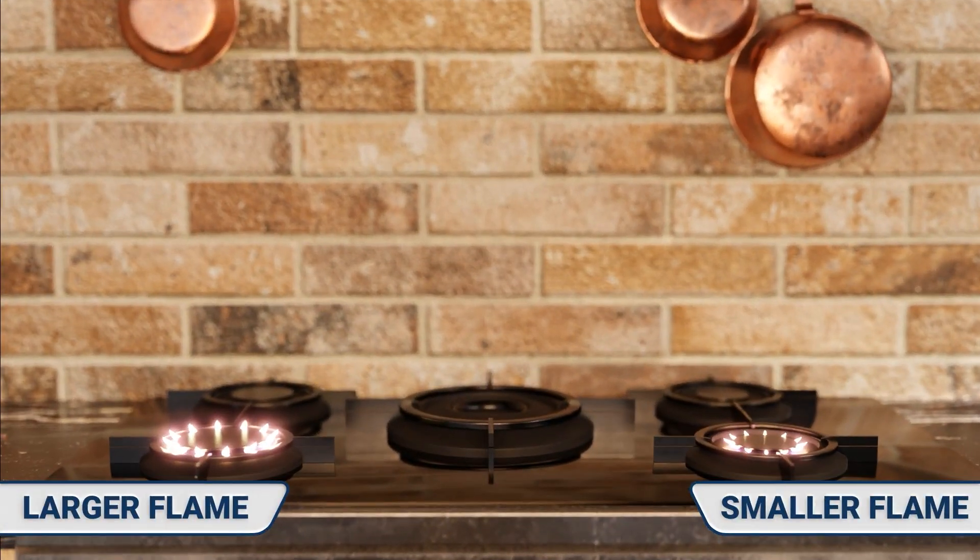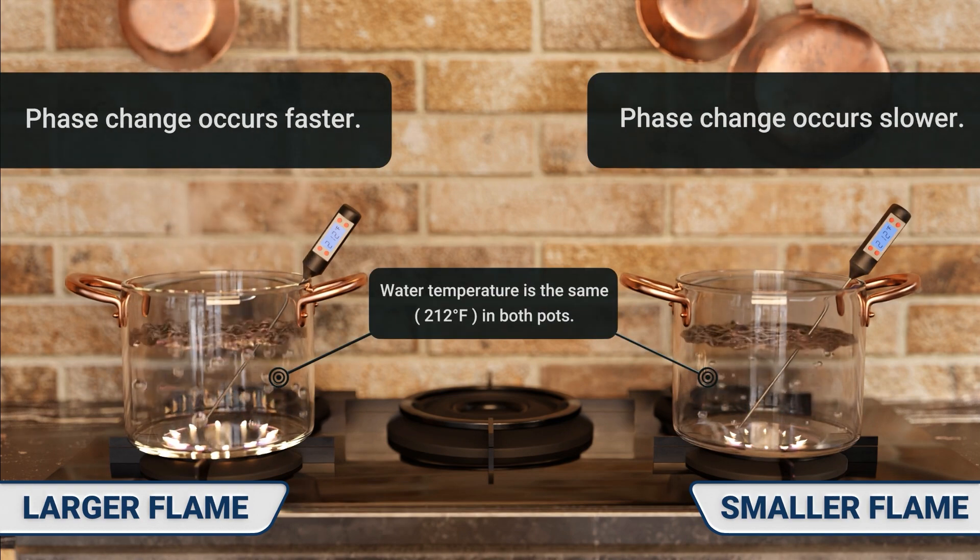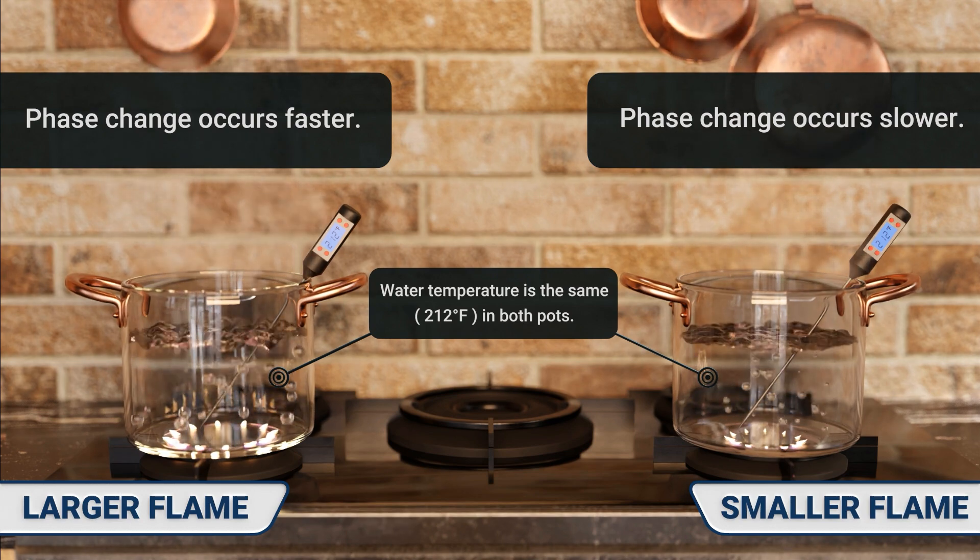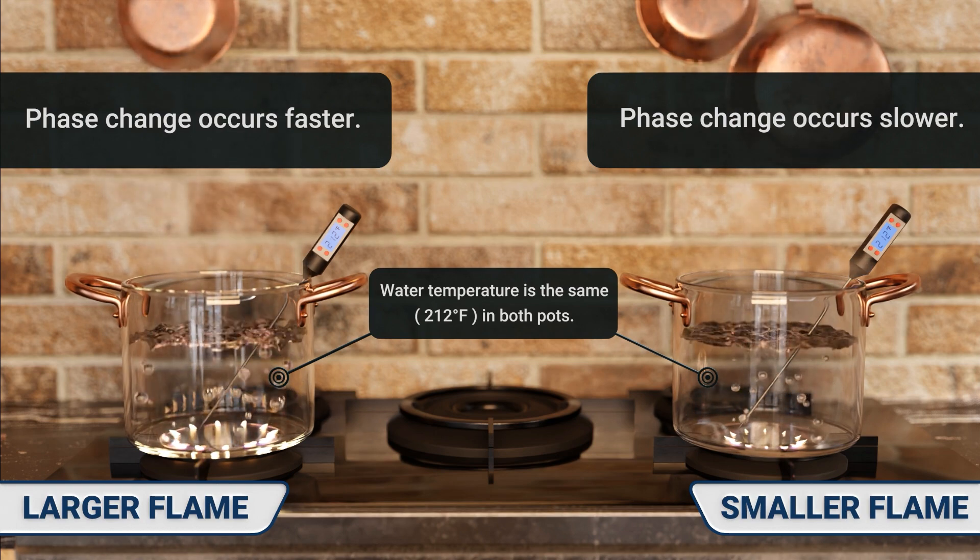Here we show two pots of boiling water, one with a larger flame and one with a smaller flame. The larger flame adds more heat to the water than the smaller flame and will apply more BTUs of heat over a shorter period of time. So the phase change will happen more quickly in the pot with a larger flame than the smaller flame.